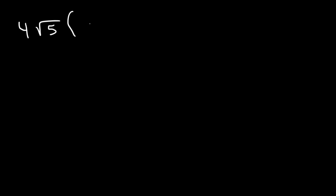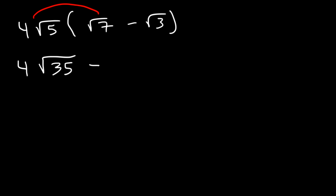Try this one: 4 root 5 times the quantity root 7 minus root 3. Let's multiply the first two — we can't multiply 4 and 7 because 7 is inside the radical and 4 is outside. However, we can multiply 5 and 7 because they're both inside the square root function: 5 times 7 is 35. Then 4 root 5 times root 3: 5 times 3 is 15 inside the radical. So the answer is 4 root 35 minus 4 root 15.